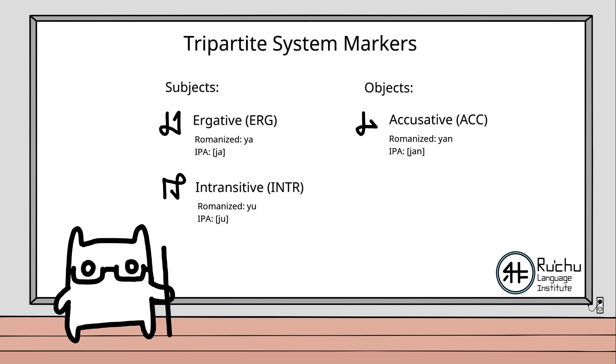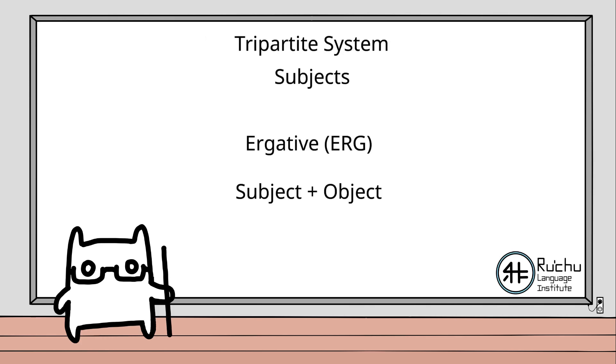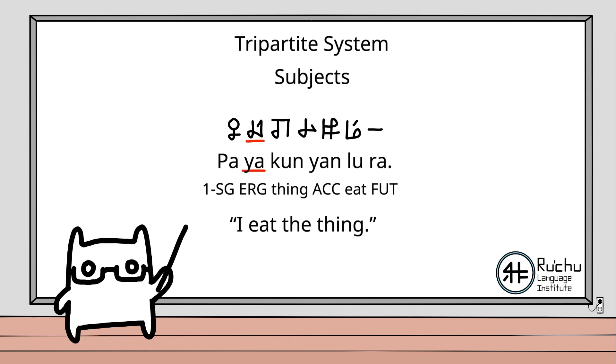Let's start with subjects. Subjects of sentences are labeled using either the ergative marker 야 or the intransitive marker 유. Ergative markers are used if the subject is paired with an object. An example of this is the sentence I eat the thing.